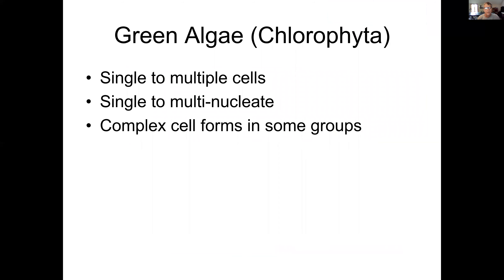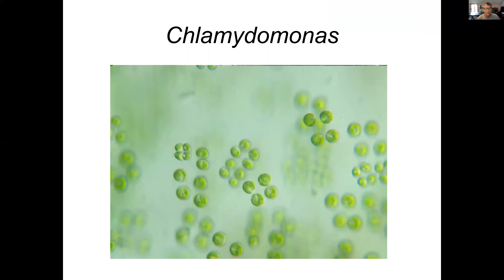The next group is the green algae, the chlorophytes. They're not in a particular order because as you saw from the taxonomy, it's kind of difficult to order them. They can be single to multiple cells, single to multi-nucleate, and they can have quite complex cell forms in some groups.